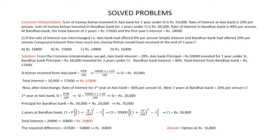Now, if the rate of interest was interchanged, then the rate of interest for the first year at Axis Bank would be 40% per annum simple interest, and the rate of interest for the next 2 years at Bandhan Bank would be 20% per annum compound interest. So the first year simple interest at Axis Bank would be equal to principal multiplied by time multiplied by rate of interest divided by 100, which is 50,000 multiplied by 1 multiplied by 40 divided by 100. On solving this, the simple interest received in the first year at Axis Bank is Rs 20,000. The principal for Bandhan Bank would be equal to Rs 50,000 plus Rs 20,000, which is Rs 70,000.